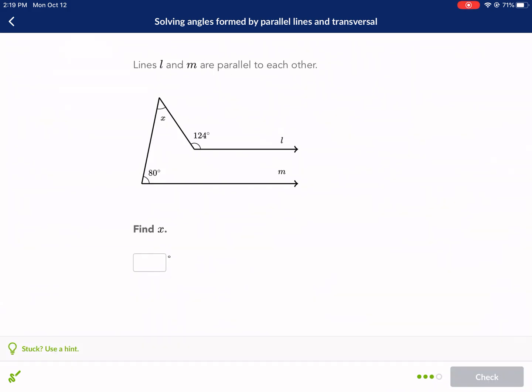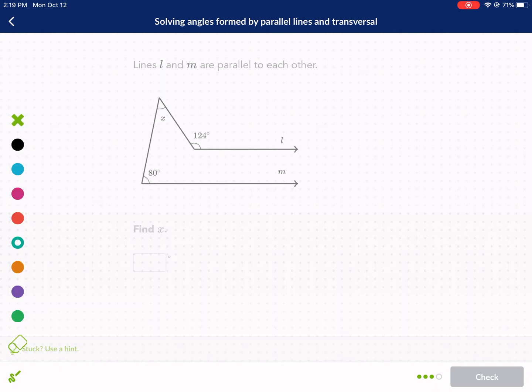All right, last question. Oh boy, angles, hell, and m are parallel to each other. All right, it wants us to find x. So let's see if we can do this. So we got this one here, we got this one here, I'm going to extend this line, you're always going to want to do that. This one's actually not so bad.